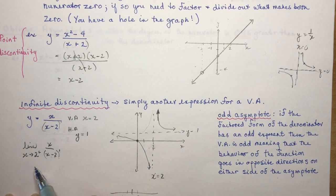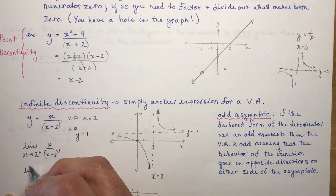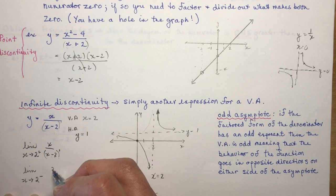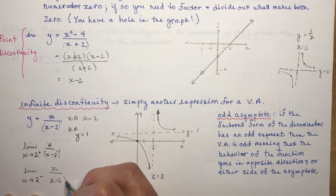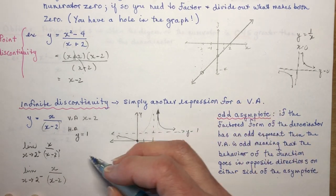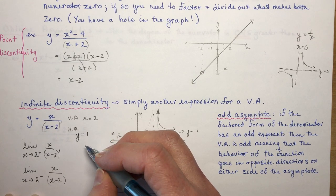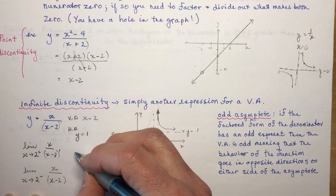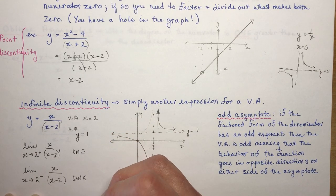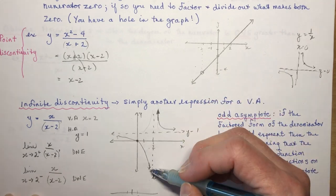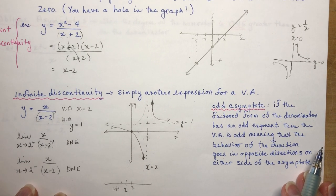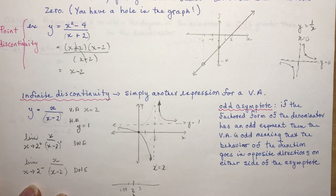Your teacher might ask you to find the limit from both sides. As x approaches 2 from the left, the function goes to infinity — but the limit does not exist, because you can't go to infinity. DNE is the correct answer.